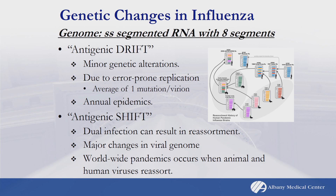Most of the time these mutations are deleterious, but every now and then one will offer an advantage, and a particular virus will become more predominant. That's the reason for your annual epidemics, because the virus is constantly drifting. Antigenic shift is due to the fact that there are eight different segments — if two viruses infect the same cell simultaneously, you get reassortment of segments, resulting in more major changes. When you get reassortment between an animal and a human influenza virus, that's when you get worldwide pandemics.